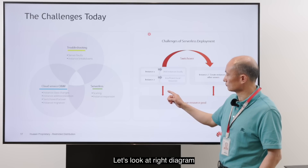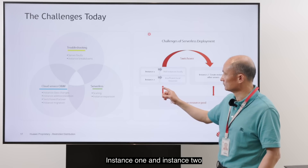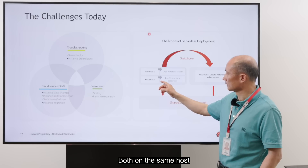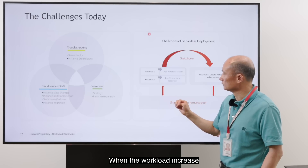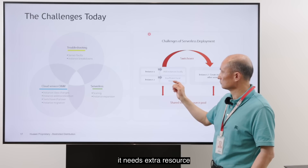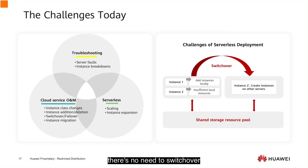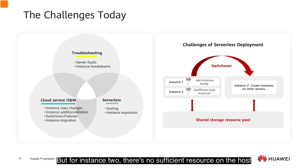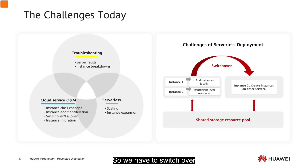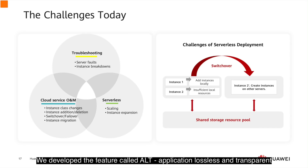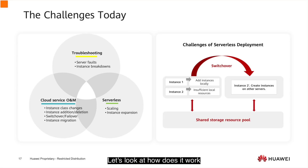Looking at the diagram, it shows two instances — Instance 1 and Instance 2 — both on the same host. When the workload increases, it needs extra resources. In the case of Instance 1, since the local host has sufficient resources, there is no need to switch over. But for Instance 2, there are insufficient resources on the host, so Instance 2 is required to migrate to another host and we have to switch over. To support non-interruptive switchover, we developed a feature called ALT, Application Lossless and Transparent.